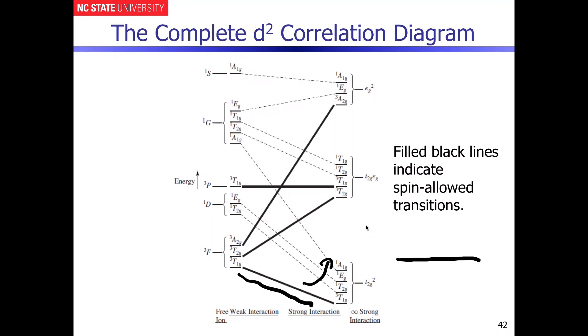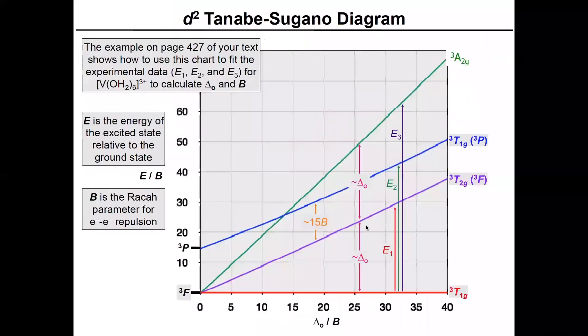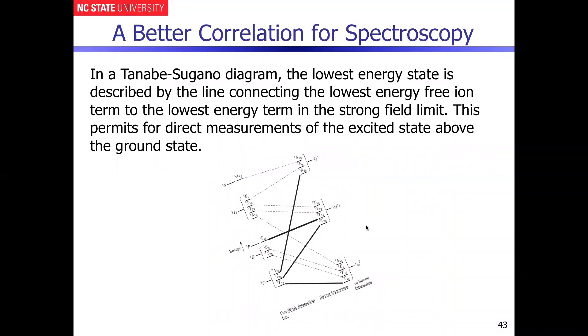The way that that's going to look is shown here. What you're really doing is the lowest energy state in these diagrams is always illustrating the free ion limit to the strongest extreme field limit, but basically it gives you a ground state now that has constant energy so that you're always measuring anything above that with respect to the same ground state.